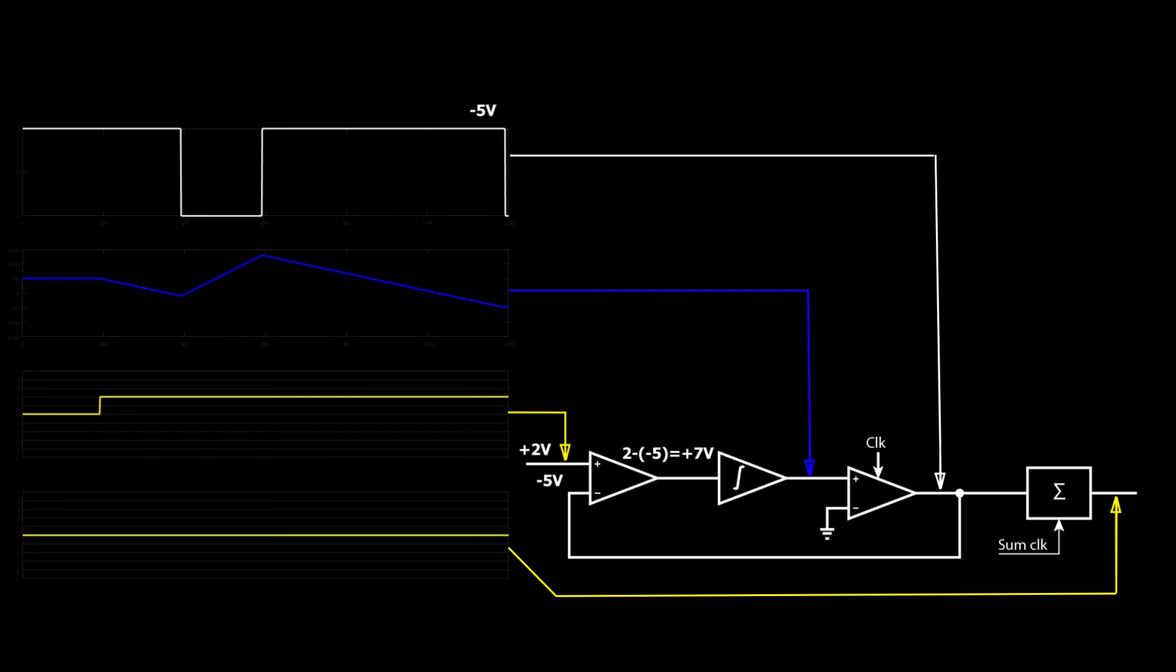But now since plus 2 minus minus 5 volts is actually plus 7 volts, then we get the much faster rise time of the integrator, which will take a single clock cycle to recover, and then the cycle repeats again. So this means that the ADC output spends longer at plus 5 volts than at minus 5 volts, and we can measure this time later by just counting the positive pulses.